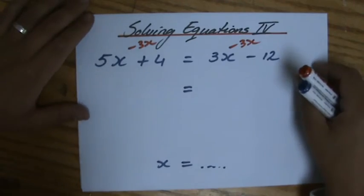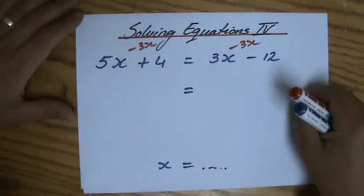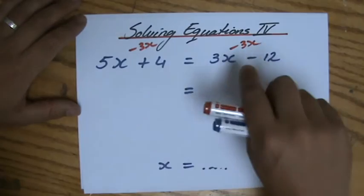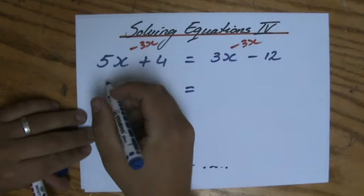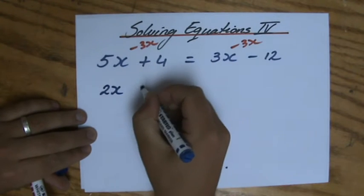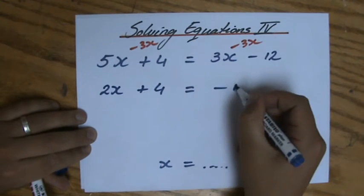Please don't say you're moving anything. Some teachers say, if you move it, the sign changes. You're not moving. I'm taking away 3X here, so I'm taking away 3X there. So, 5X minus 3X, that will be 2X plus 4 equals minus 12.